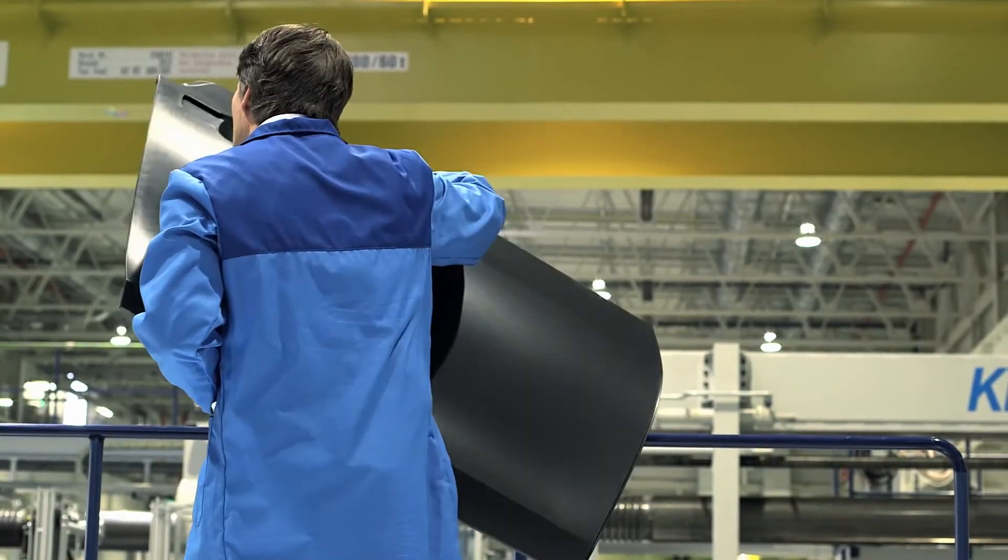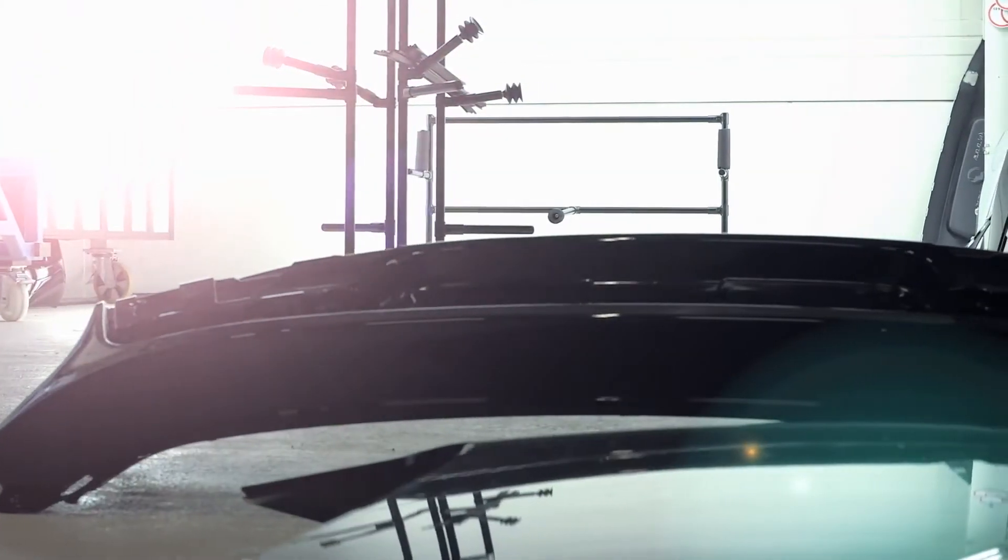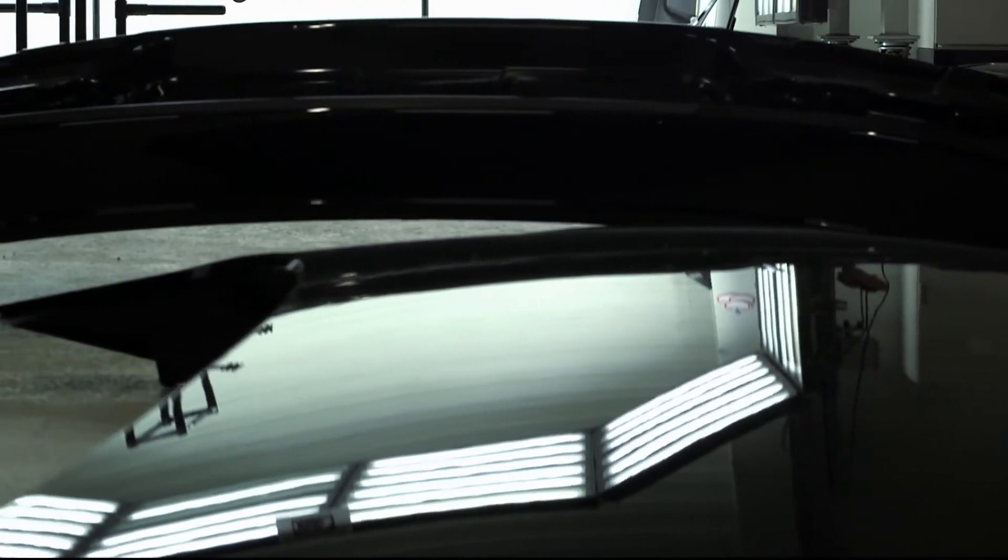Almost like the skin of the human body, the thermoplastic external skin protects the vehicle from all environmental influences. Rust-free surface protection, which is also energy-saving and therefore sustainable in the production process.